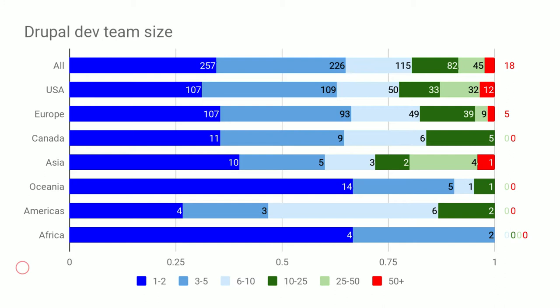The other question was about the size of the Drupal team — how many developers do Drupal: just you, you and somebody, you and a bunch of others, or a whole Drupal army. The vast majority work in teams of five or less. Those are the two blue colors on the chart, and then it scatters out all the way to 50-plus. There's a not-insignificant handful in those large teams.